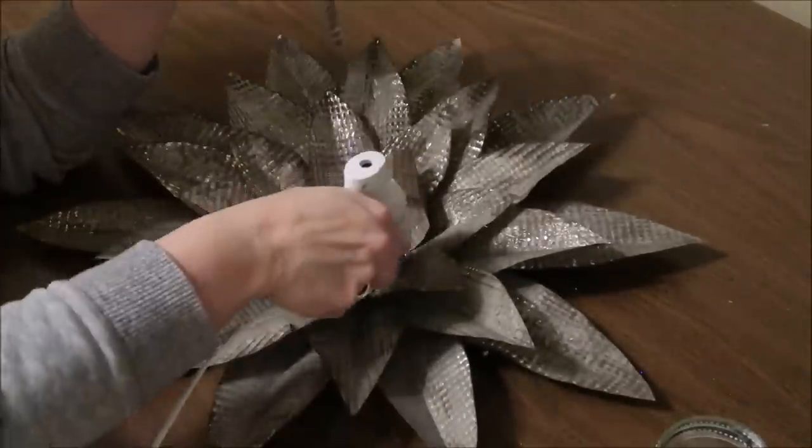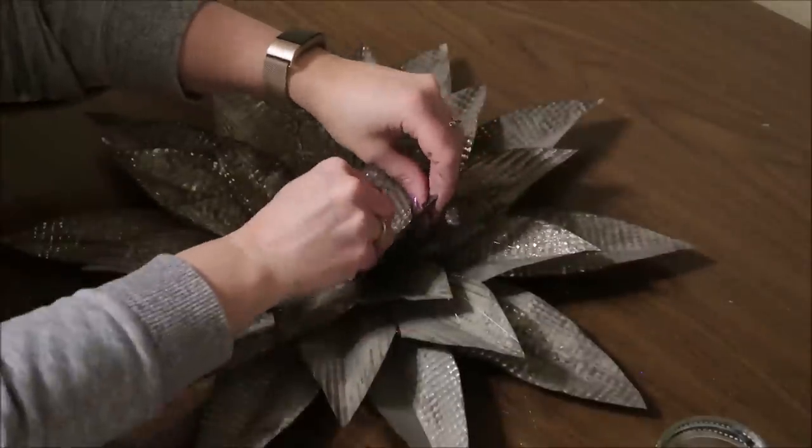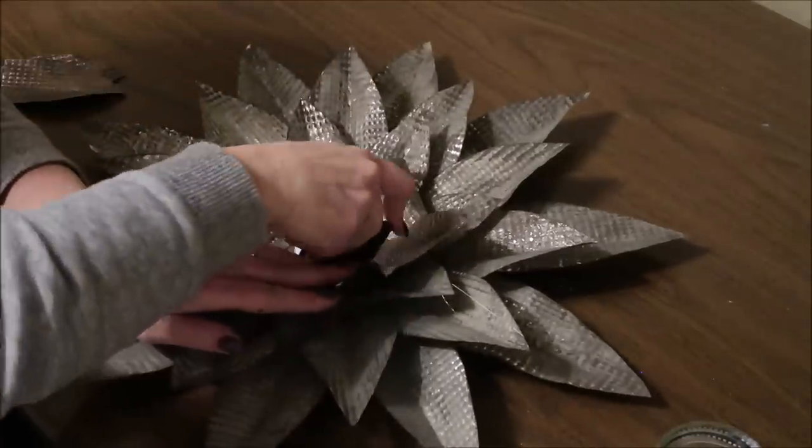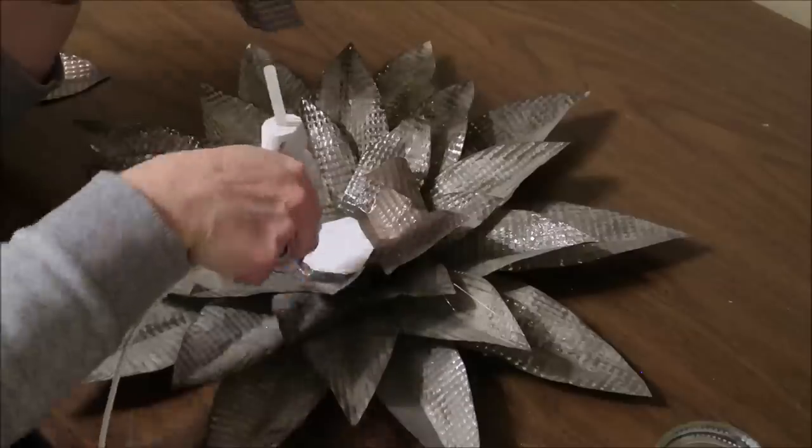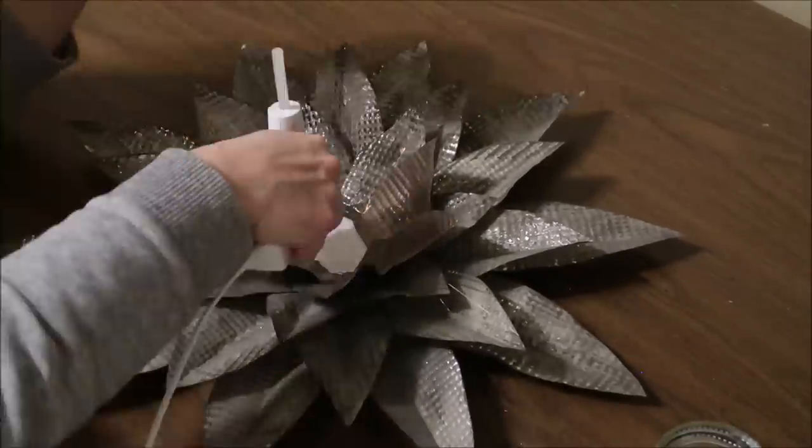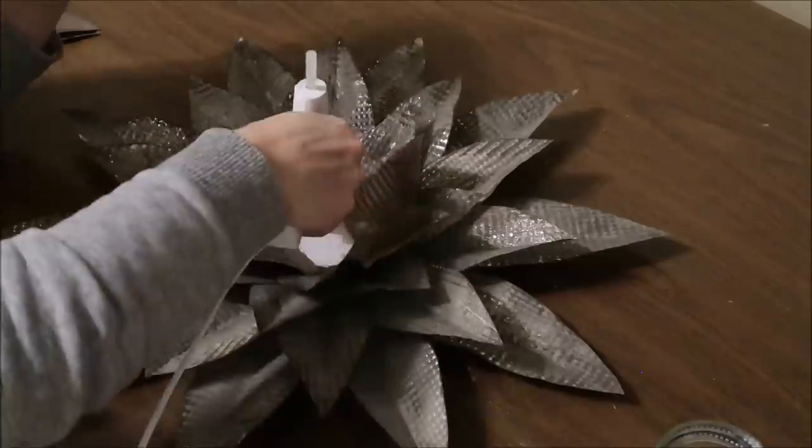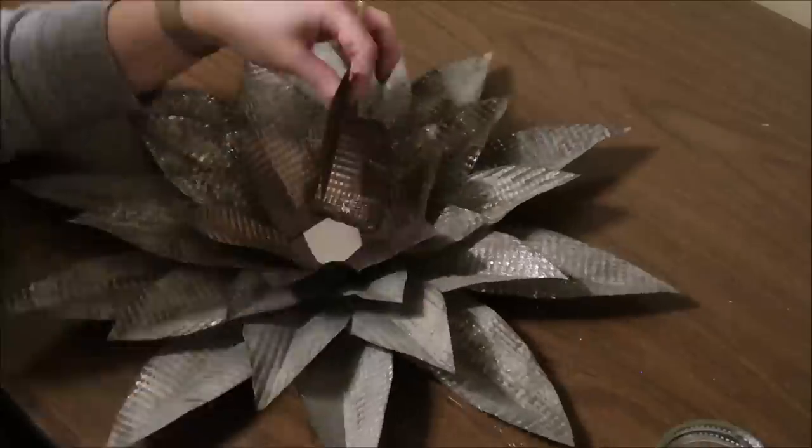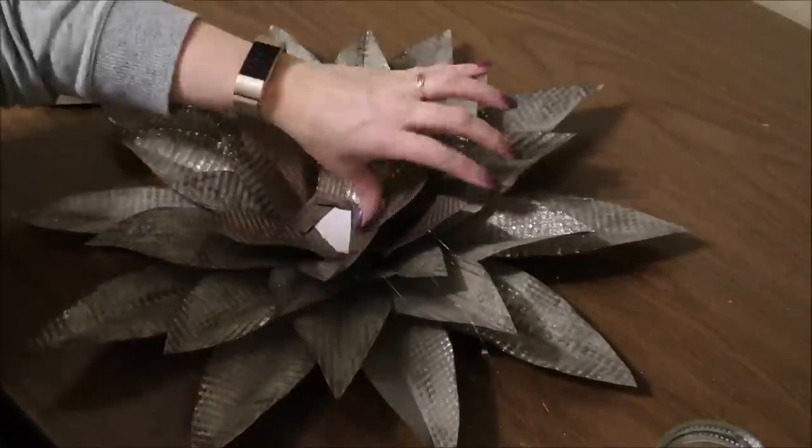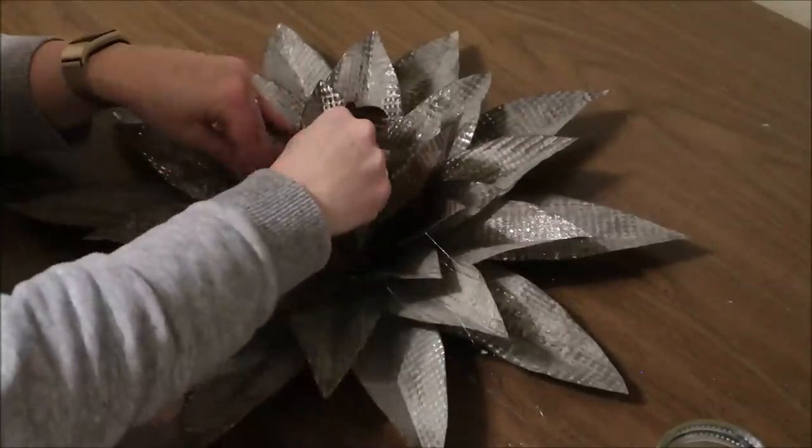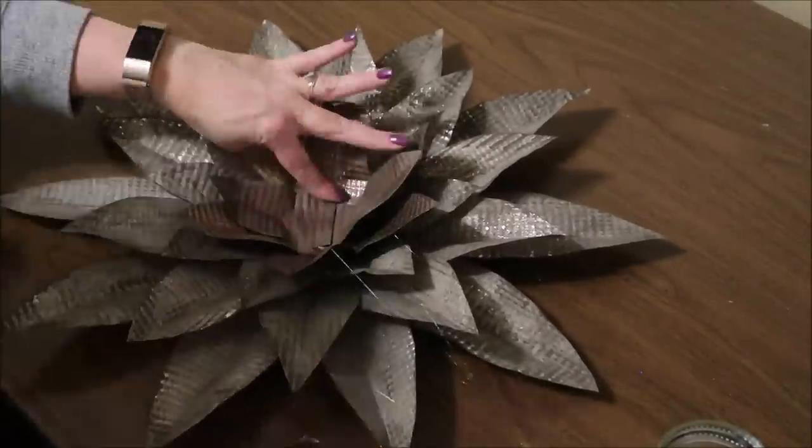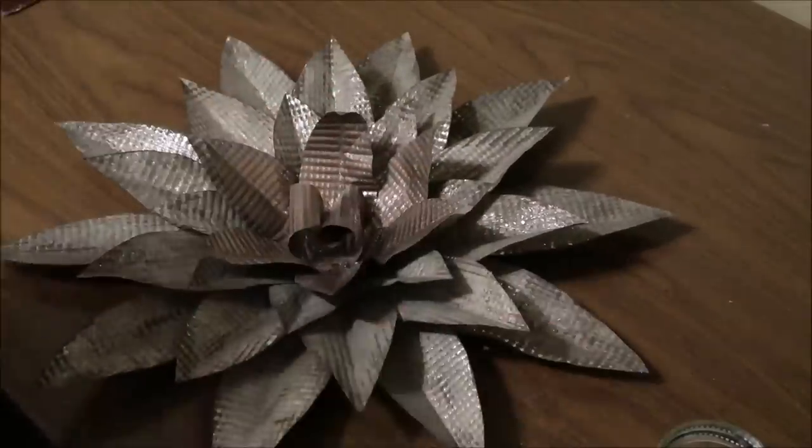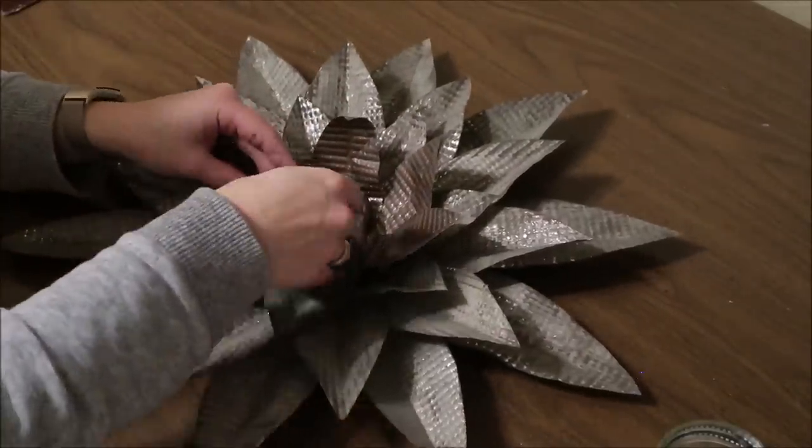For the center of the flower, I'm going to take six of those spray-painted petals and put those around in the center, just like I've been doing for all the other petals. Then I'm going to take the two remaining petals and I'm going to use those to cover up the remaining white foam core. I'm just going to put one over half of that remaining white circle in the center and the other one over the other half. Then I'll just curl those center pieces in to make it look more like the center of a flower.